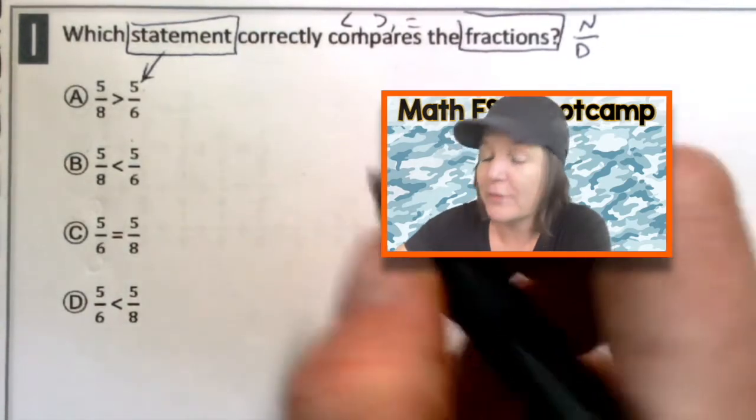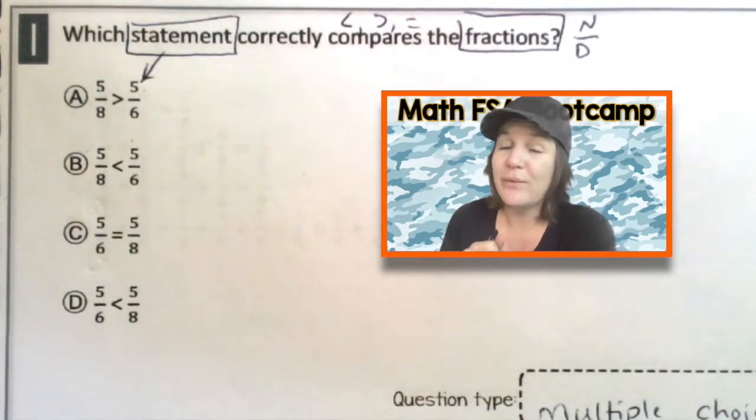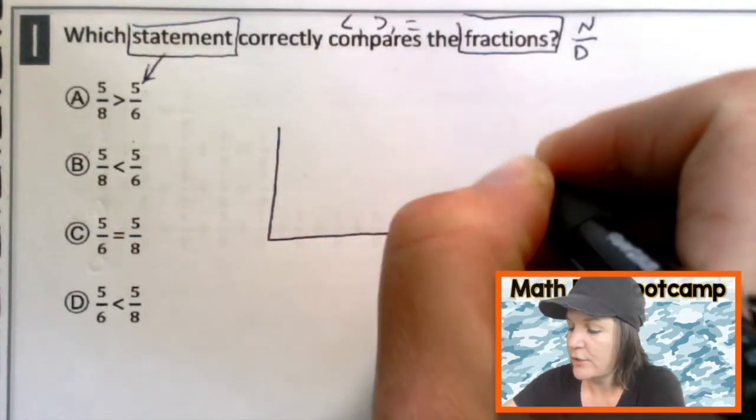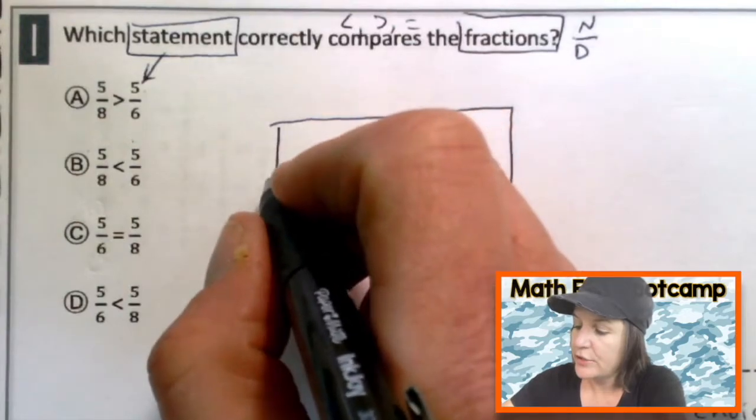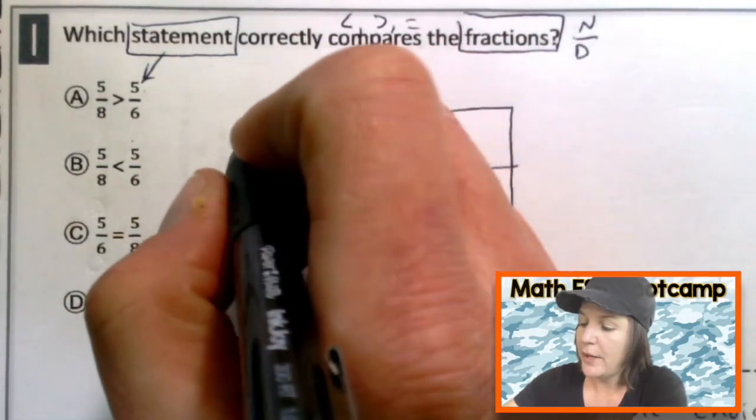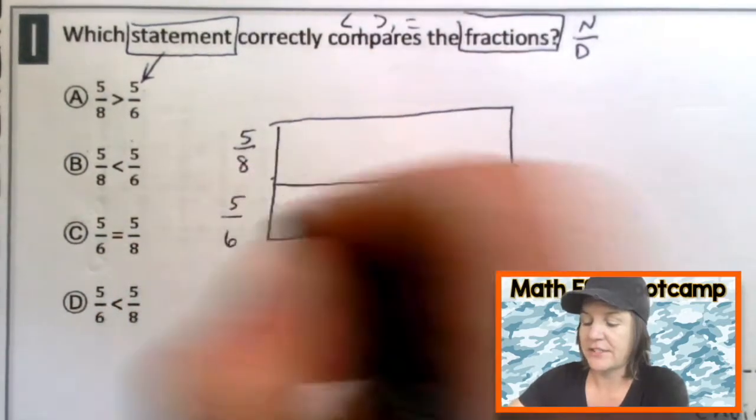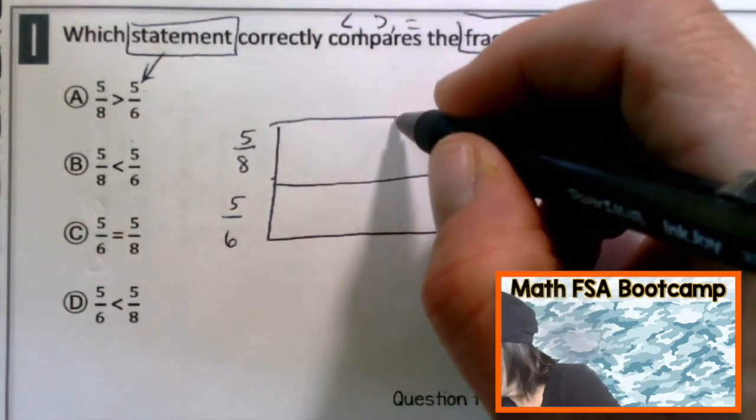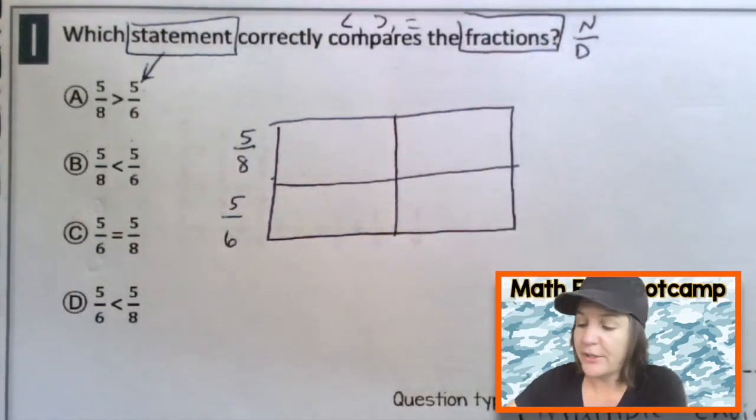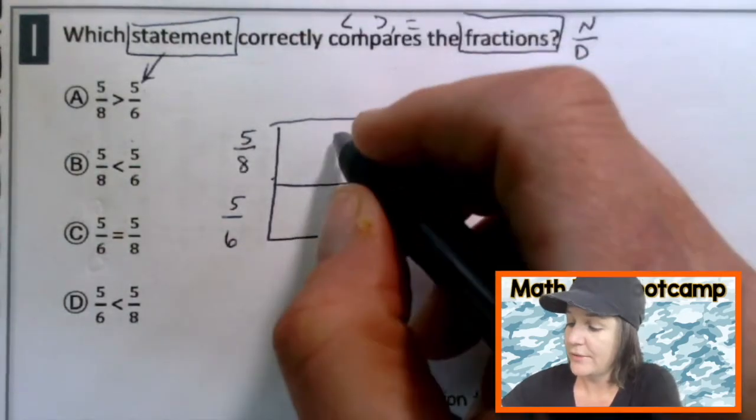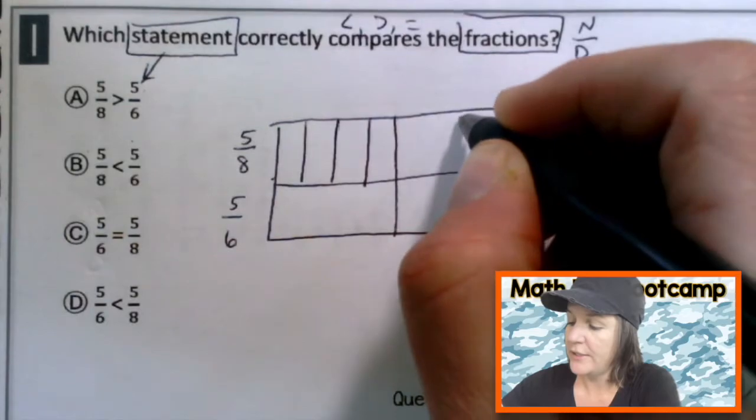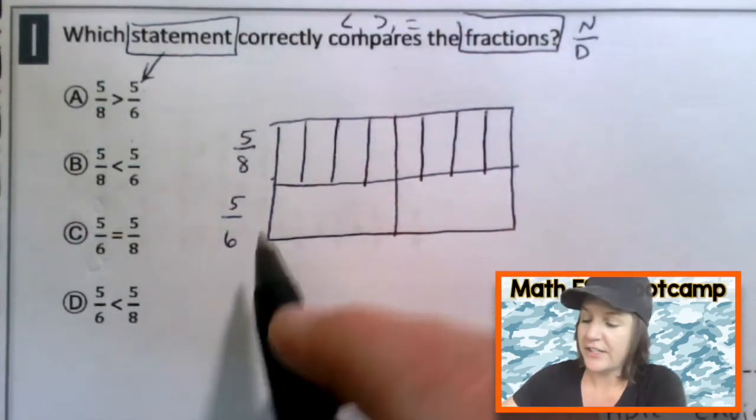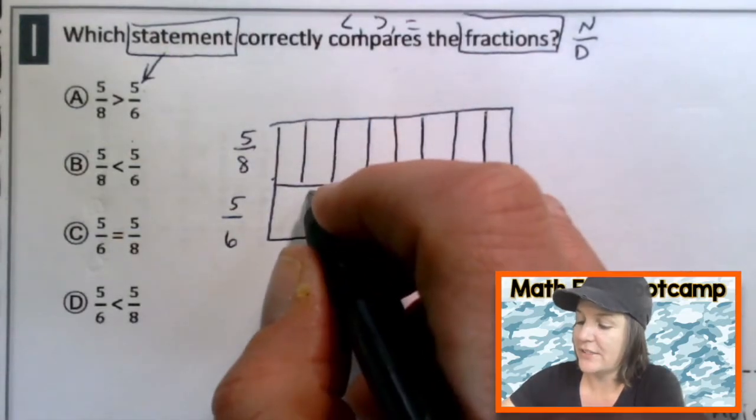So we have two fractions, five eighths and five sixths. And what we need to do is compare them and see which one of these is correct. So here is how I compare them. I do it two ways. First, I model with a drawing. And the second way is checking with cross multiplication. So because we're comparing two fractions, let's make a rectangle. Two fractions. So I'm going to cut it in half and I will model five eighths on top and five sixths on the bottom. So because they are both even, that means that I can go straight down the middle. And for eights, I can do four and four.